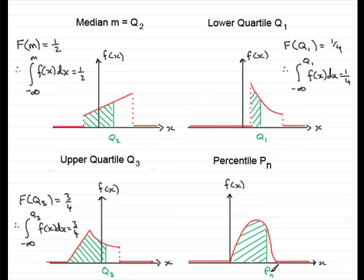Well, Pn is a general value. So suppose you were talking about the 60th percentile, P60, that would be 60 out of 100, 60% if you like, or 0.6 is the probability of being less than the 60th percentile.